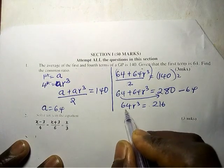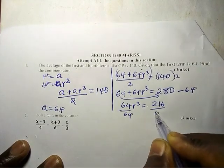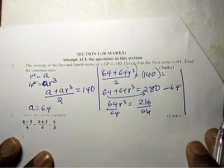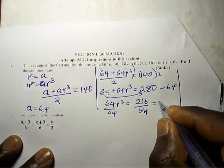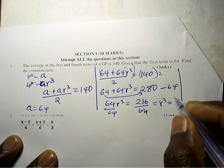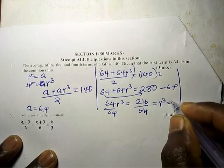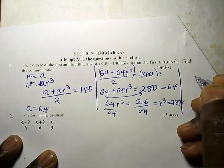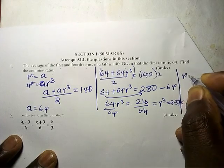Divide both sides by 64 so that we have r cubed. So r cubed is equal to 3.375.